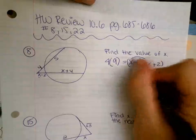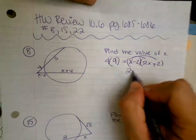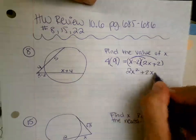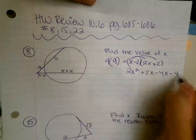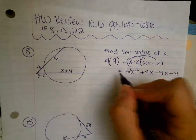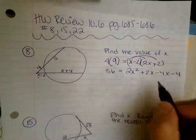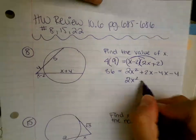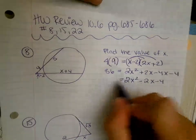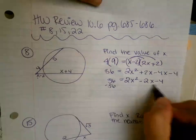And then I'm going to FOIL this out. 2x squared plus 2x minus 4x minus 4 equals 9 times 4. 9 times 4 is 36. So I'm going to have 2x squared minus 2x minus 4 equals 36. I'm going to subtract 36 from both sides.